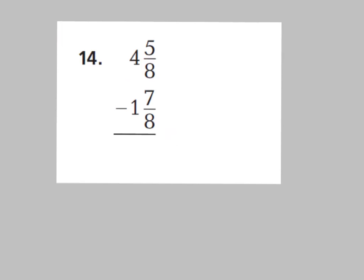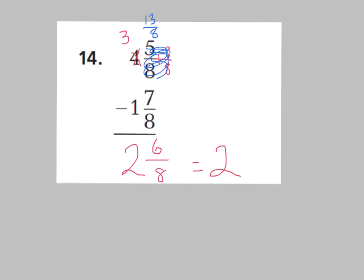For this one, we're going to look at our fraction part first: 5 eighths minus 7 eighths. I cannot take 7 eighths from 5 eighths, so I have to regroup. I'm going to rename this 4 wholes as 3 wholes — I'm taking away a whole, so I need to make a whole. I'm going to add a whole to my 5 eighths: 5 eighths plus 8 eighths is 13 eighths. Now I can subtract: 13 eighths minus 7 eighths is 6 eighths. Then 3 wholes minus 1 whole is 2 wholes. So the answer is 2 wholes and 6 eighths, or simplified, 2 wholes and 3 fourths. I know it's simplified because 3 and 4 are consecutive. 6 divided by 2 is 3, and 8 divided by 2 is 4.